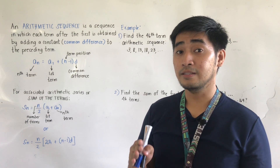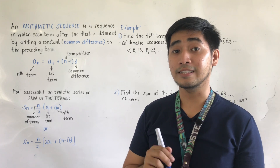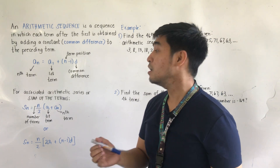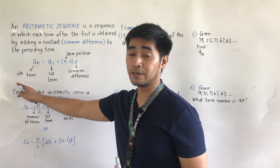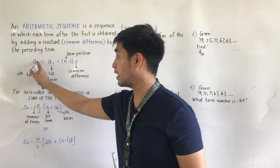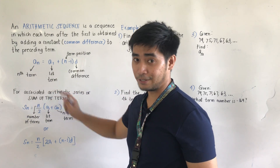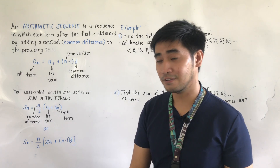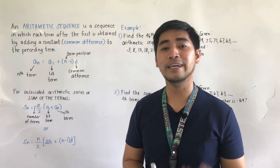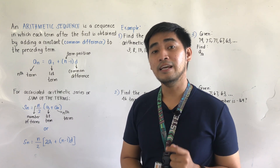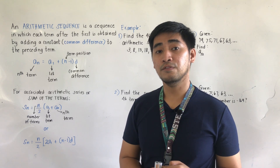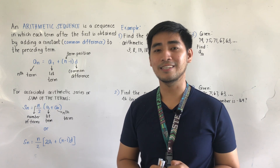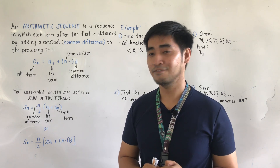This is the formula for the arithmetic sequence if we need to get a specific term: a_n = a_1 + (n - 1) × d, where a_n is the nth term, a_1 is the first term, n is the term position, and d is the common difference. We get the common difference by subtracting the second term minus the first term. If the sequence is increasing, d is positive; if decreasing, d is negative.